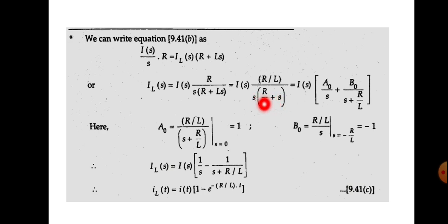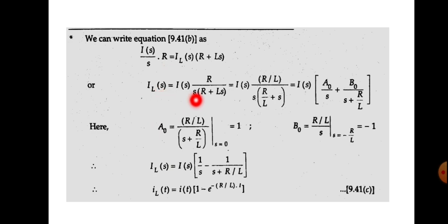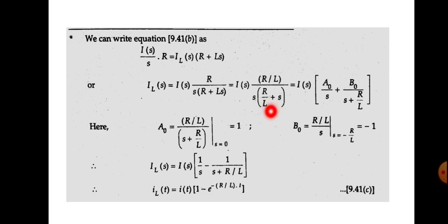This is in the form of S plus A. We take L outside, which is why we get this form. This is the S-domain equation. In order to get the time-domain equation, we have to find the inverse Laplace transform. To find the inverse Laplace transform, it is better to change the denominator term into the form of S plus A so we can easily find the inverse Laplace. Here the denominator is of second order with no S terms in the numerator, so we apply the partial fraction method.